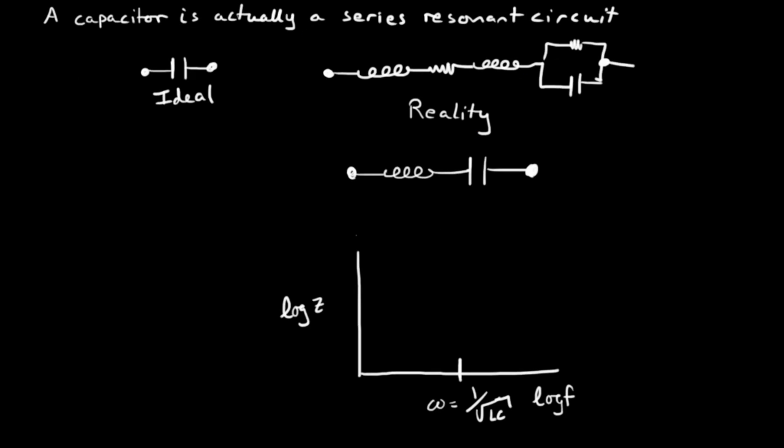Well a capacitor is actually a series resonant circuit. This is what you would normally think of as a capacitor, it's the ideal capacitor. But in fact when you introduce a capacitor into your circuit, let's say a surface mount component, you're going to have a very non-ideal situation.